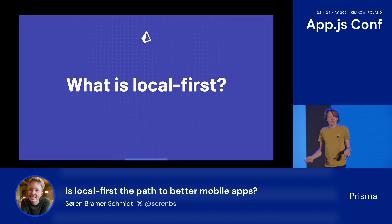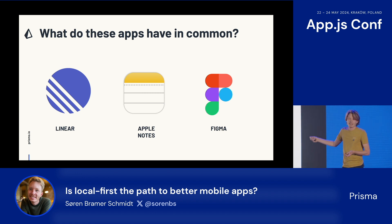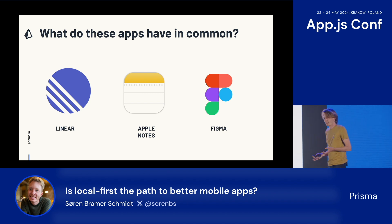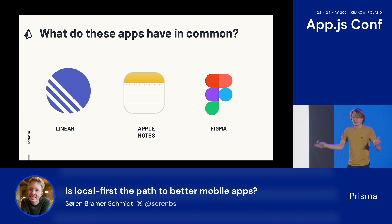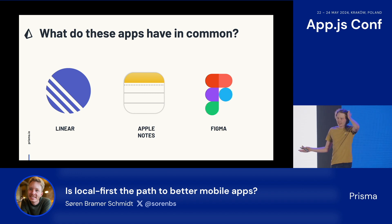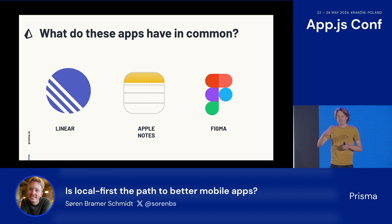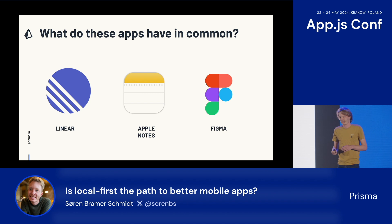So what is Local First, and why are we talking about it? A good place to start is to look at some apps that are built this way — apps that most of you are familiar with. The first one is Linear, a project management tool. Some of you probably use it. It came out six, eight years ago, and it's just way better than all the other tools. And why is it better? It's better because it's fast — because all of your data is local. You don't need to wait for a round trip to the server before you can click the checkbox.